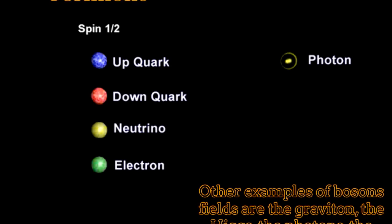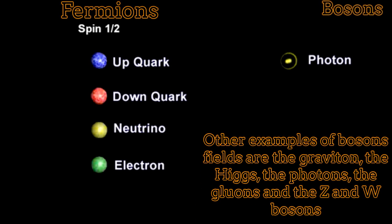Among the fermions we have the quarks, neutrinos, electrons and other particles. On the other hand, examples of bosons are the photons, the gravitons, the bosons Z and W, the gluons and the Higgs boson.